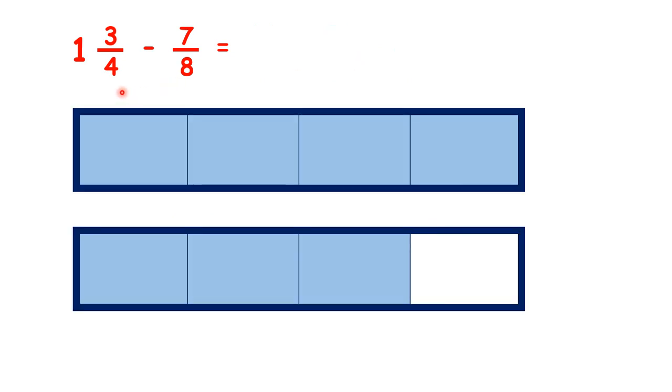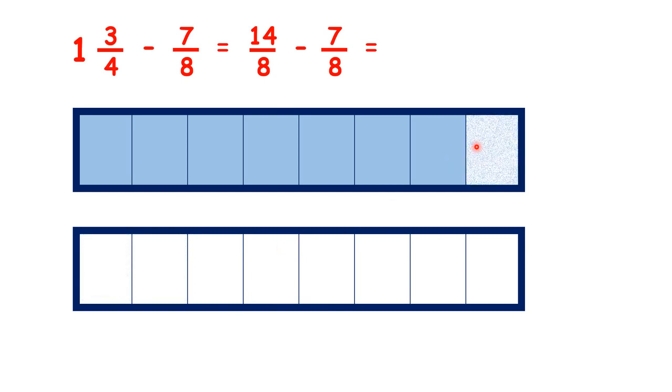So let's see what we did here. We started with 1 and 3 quarters, which is the same as 14 eighths. Then we subtracted 7 eighths to get our answer 7 eighths.